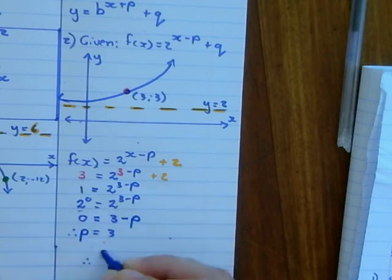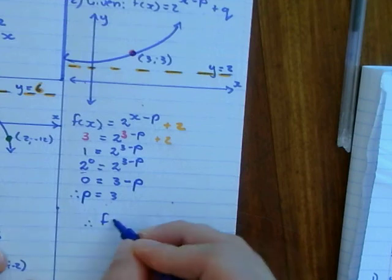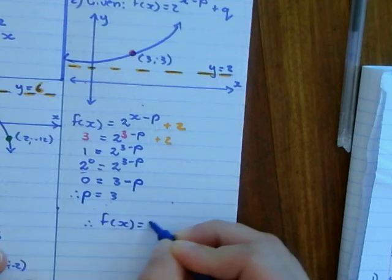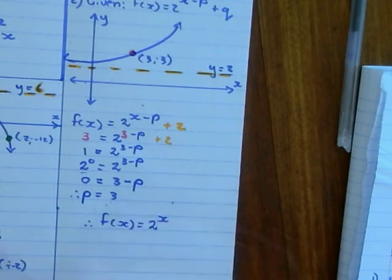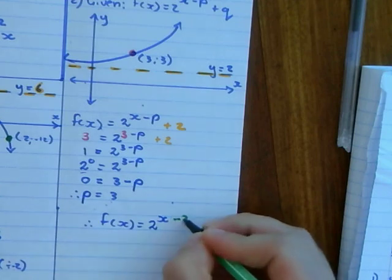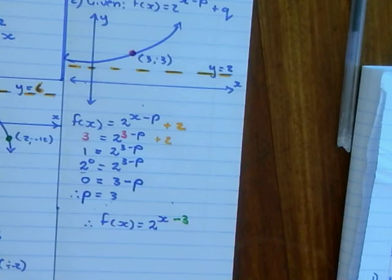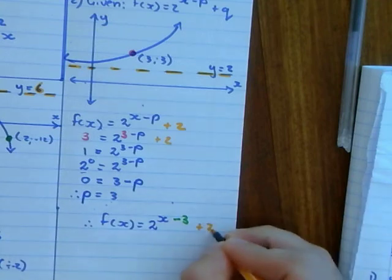So therefore, we have the function. f(x) is equal to 2 to the power of x, not plus 3 but the opposite sign. So it's going to be minus 3 plus my asymptote, that is 2.